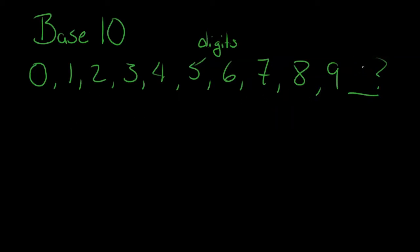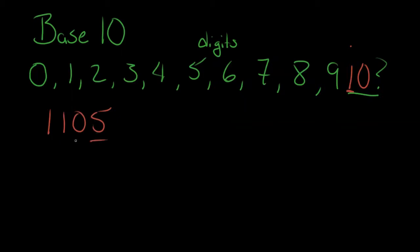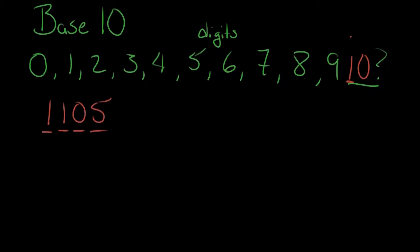Instead, we write '10' by reusing what we have: the one just means we have one complete set of those digits, and the zero is the placeholder. This is place value — the ones place, the tens place, and so on. If I have a number like this: this is my ones, this is my tens, this is my hundreds, this is my thousands. We can do the same thing with other number systems.